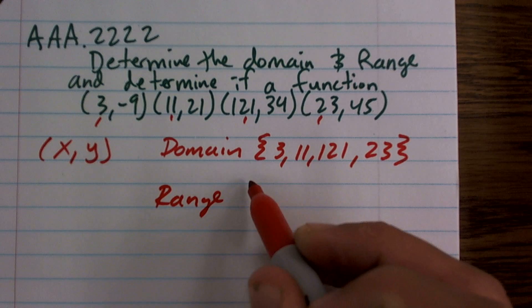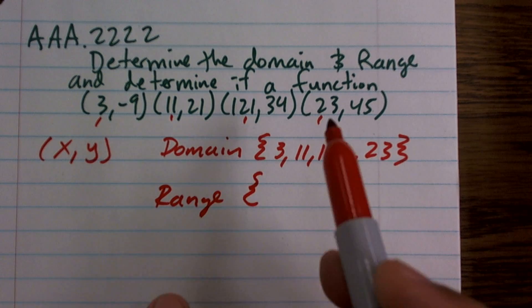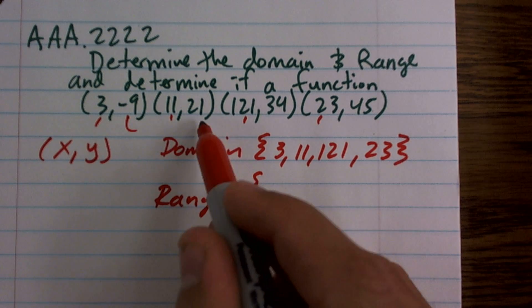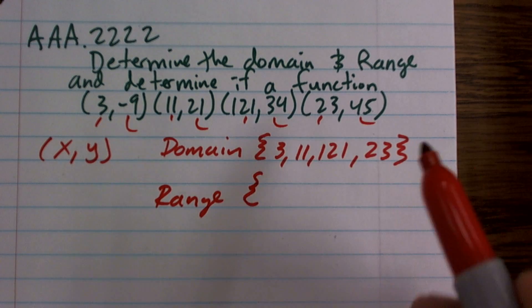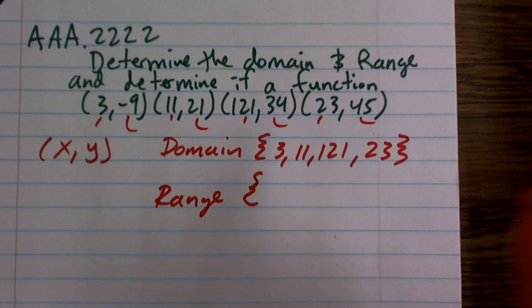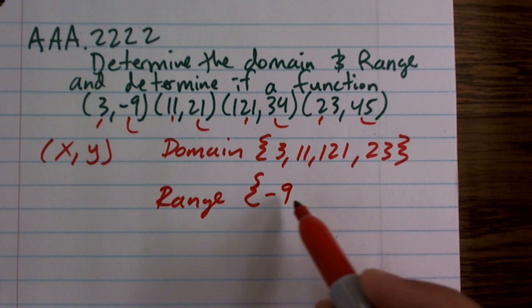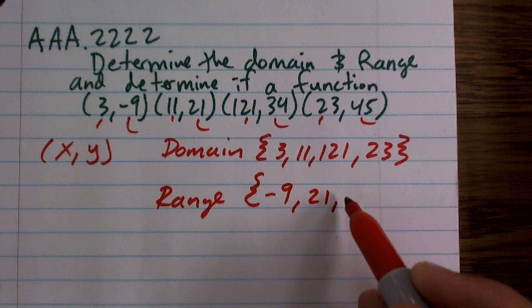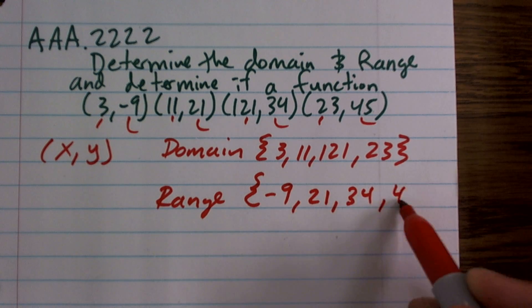Then, to find the range, I'm going to take a look at all the y coordinates, because those are going to be all my output values. So the range is going to be negative 9, 21, 34, and 45.